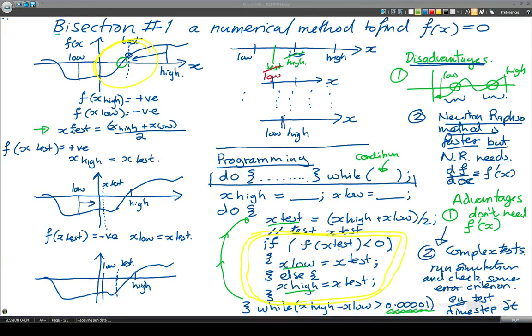Okay, so just to sum up, this is a look at bisection. We've been thinking about bisection, which is a numerical method to find f of x, to find a place where f of x is equal to 0.